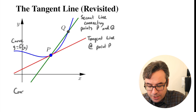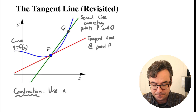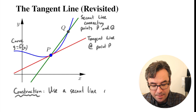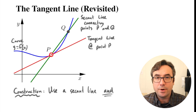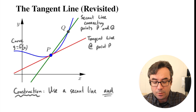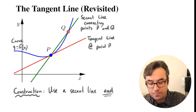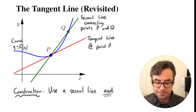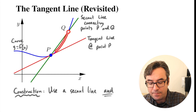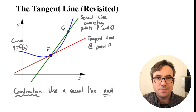The idea we're going to use to construct our tangent line involves the secant line, but with something extra. We're going to keep point P fixed, and then imagine moving point Q along the curve, sliding it closer and closer to point P. As we do that, the secant line connecting the two points adjusts accordingly.